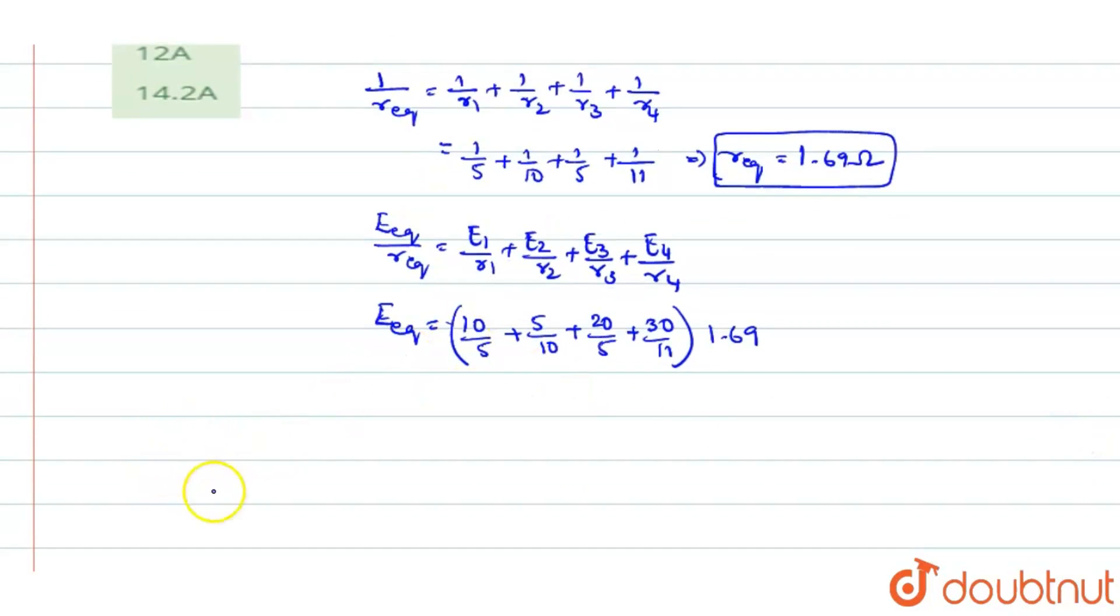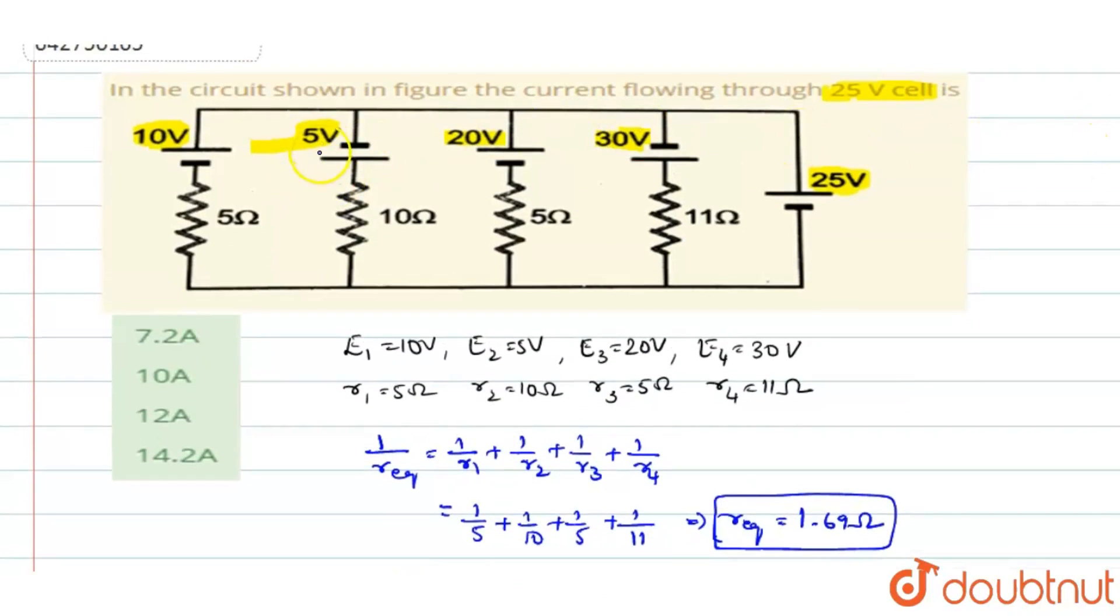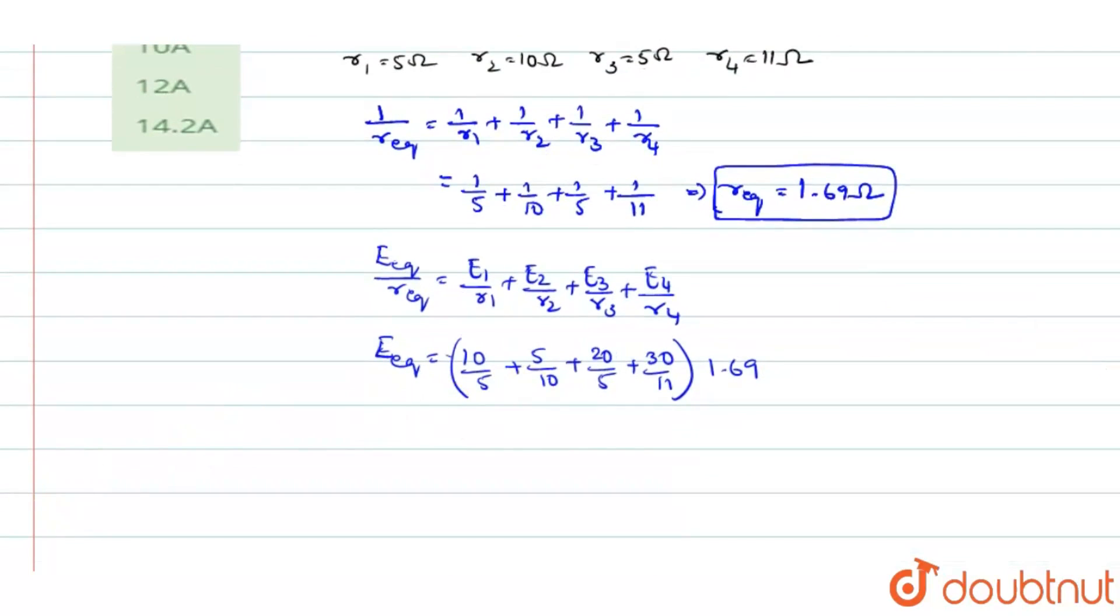Now again simplifying all these values, you can see here the second cell, the second battery is connected in opposite direction. So while you write the equation, you will be writing it with an opposite sign. So here you have to use it as minus E2 by R2. So here also, same thing, you have to change. It will be minus E2 by R2 like this.